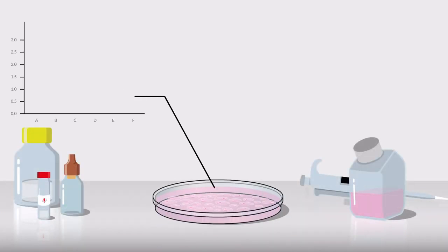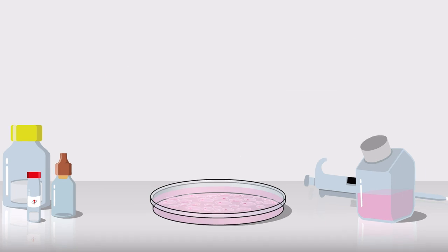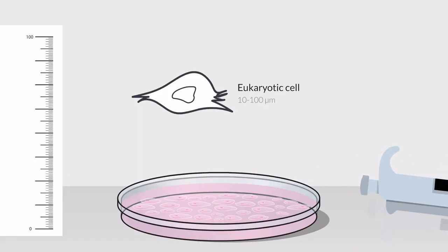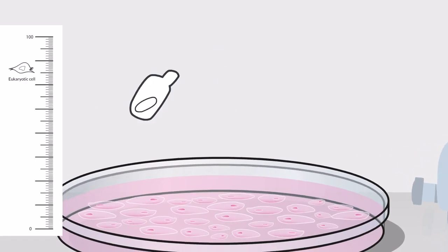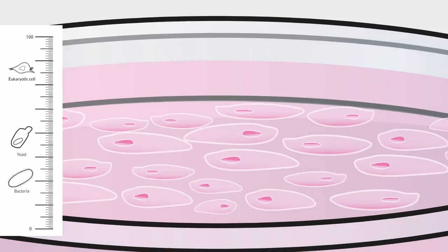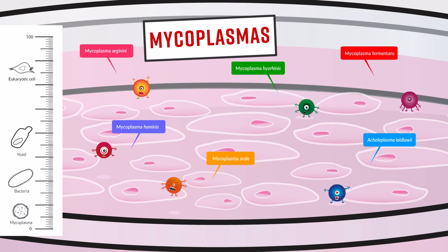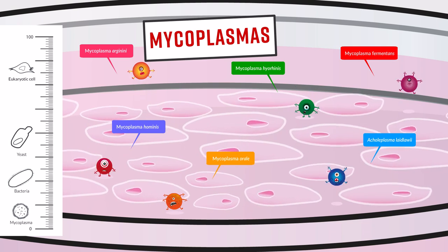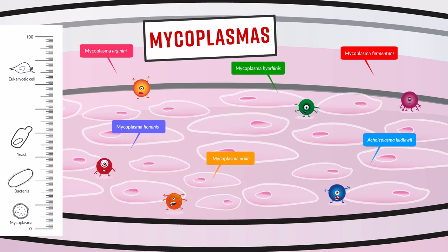Does your research depend on reliable and consistent cell culture? Mycoplasma contamination is a major problem in cell culture, and unlike yeast and bacteria, you can't just look under a microscope and see it. 95% of mycoplasma contamination is caused by just six species, and there are a number of possible sources.